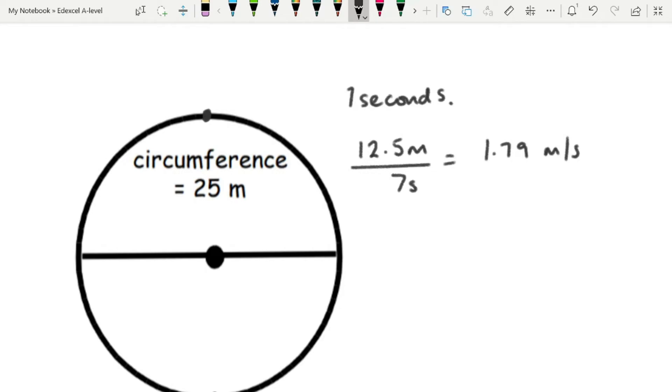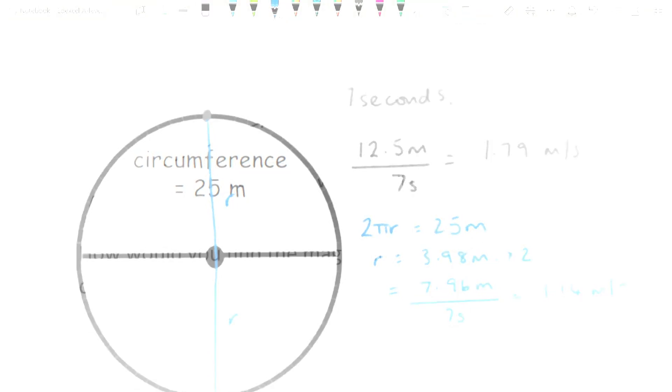What about your velocity? Well, we know that the actual displacement from your starting point is that. And that's going to be twice the radius. And so if we do the calculation and we say 2πr is equal to 25 meters, because that's what the circumference of the circle is, then our r should be 3.98 meters. And 2r would be 3.98 times 2, which gives us 7.96 meters. Divide that again by your 7 seconds, and you end up with 1.14 meters per second.